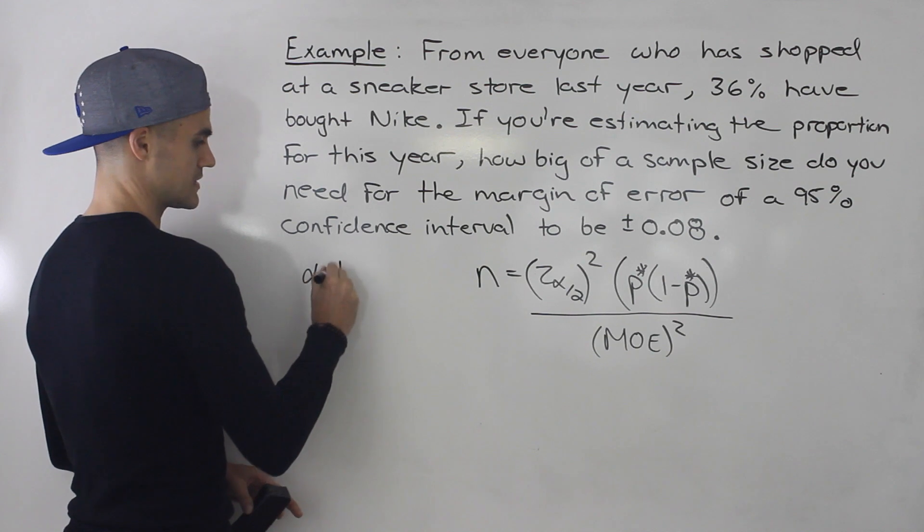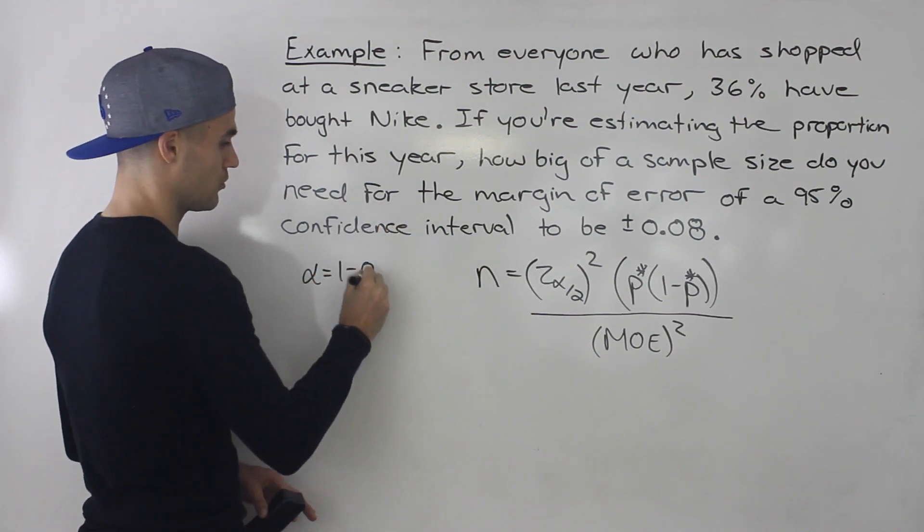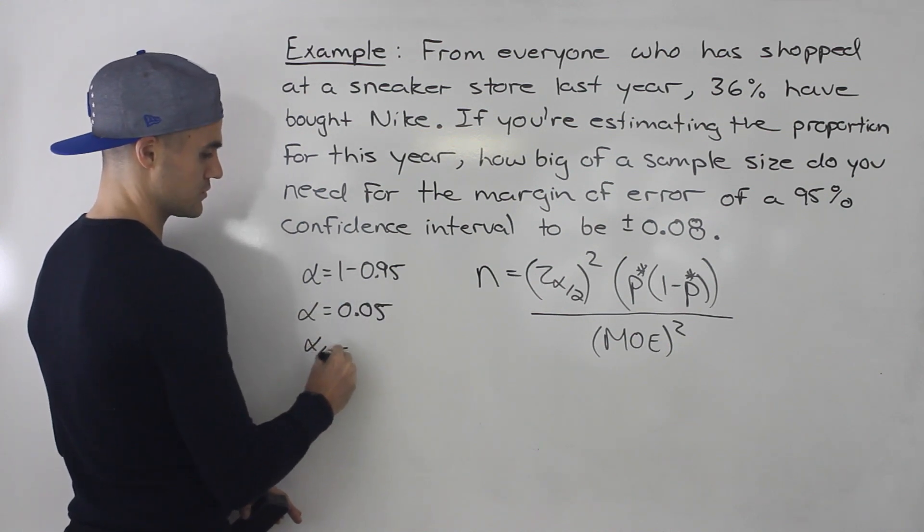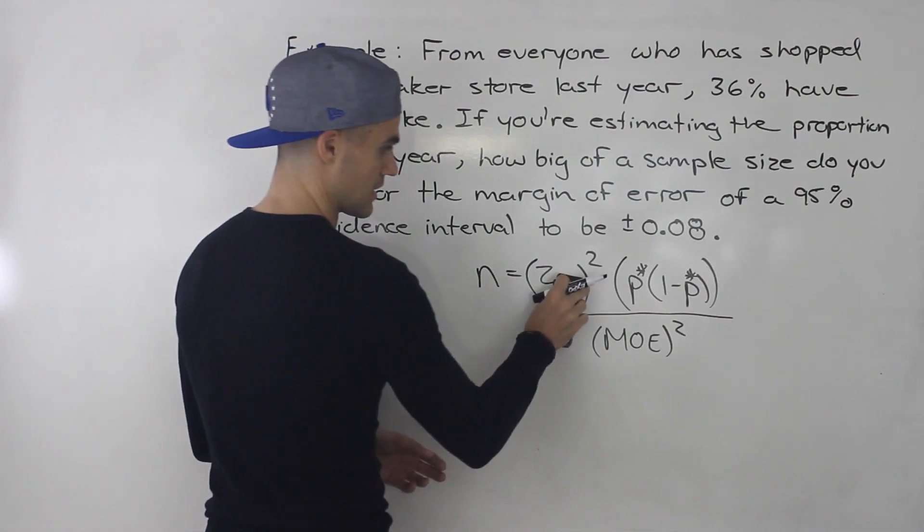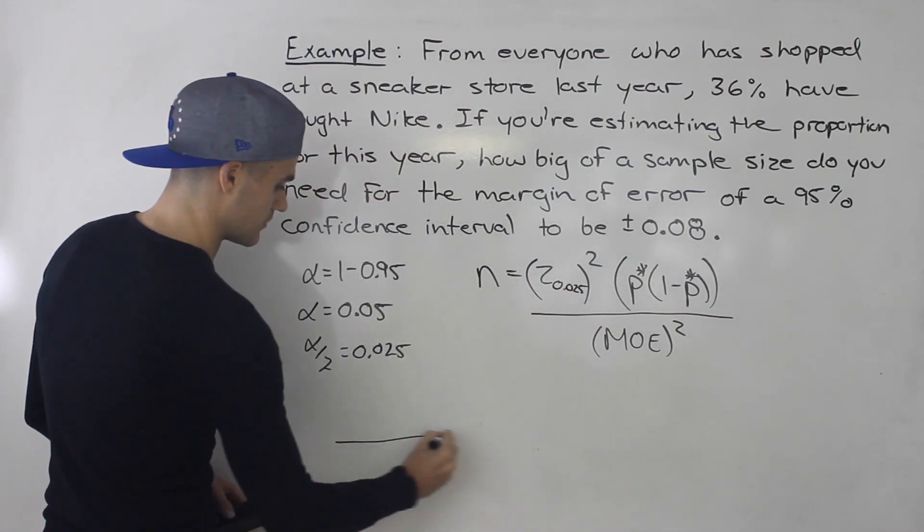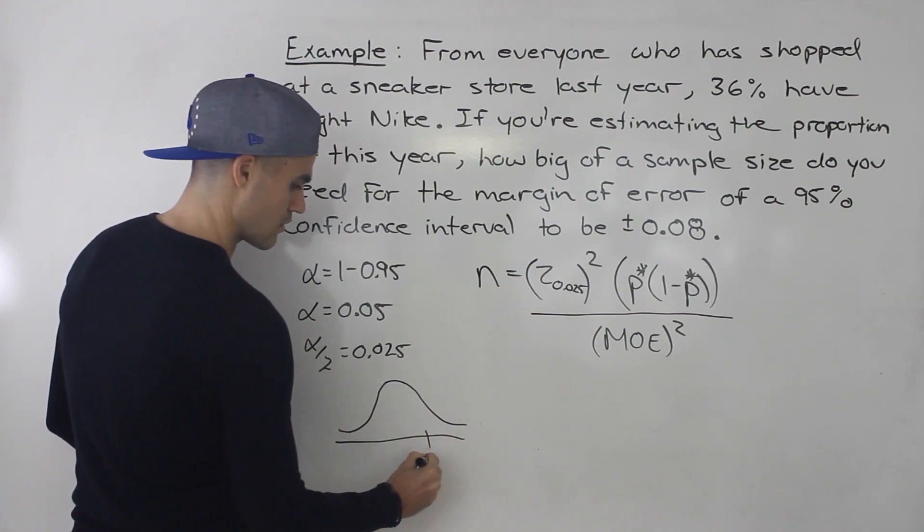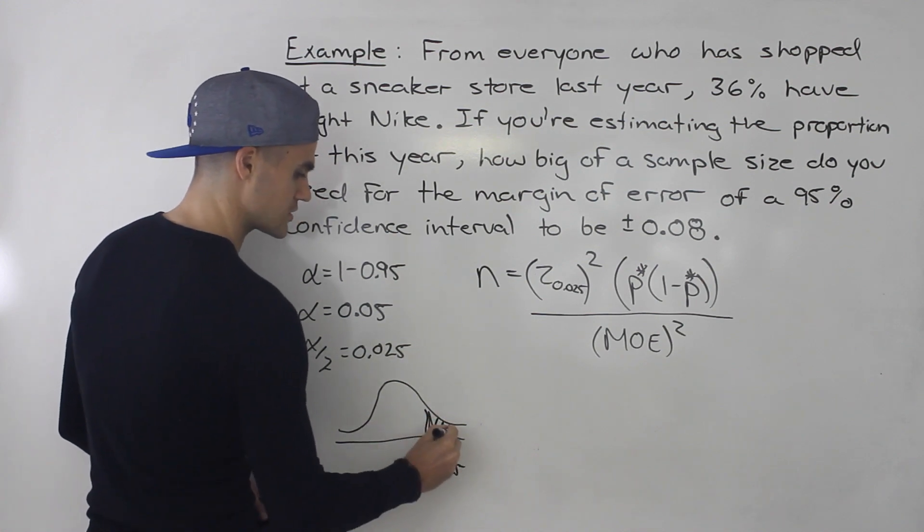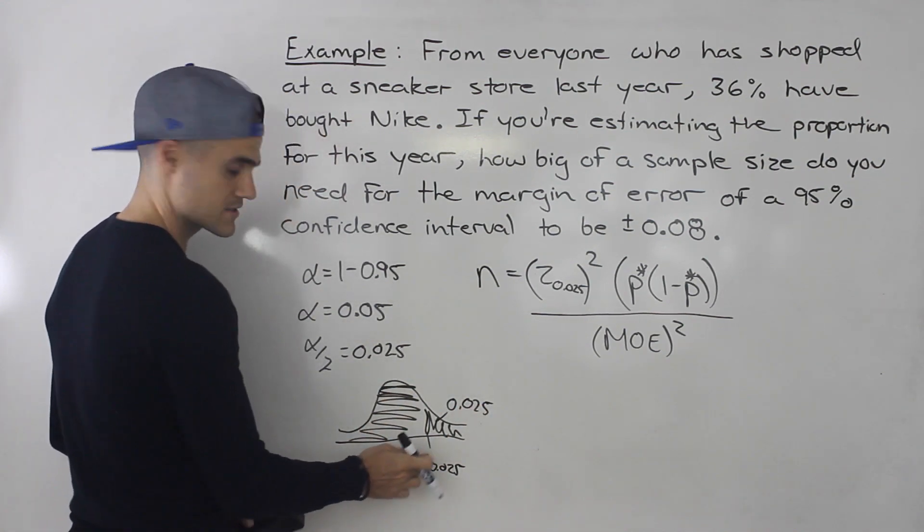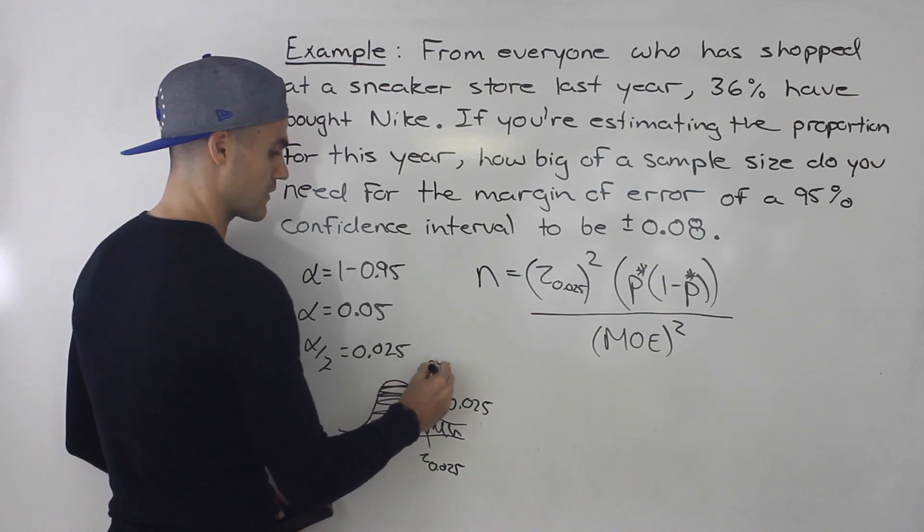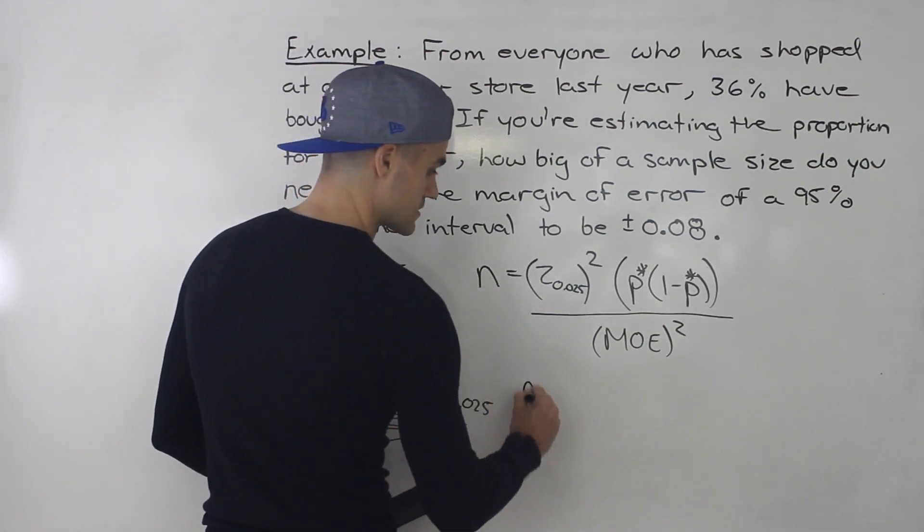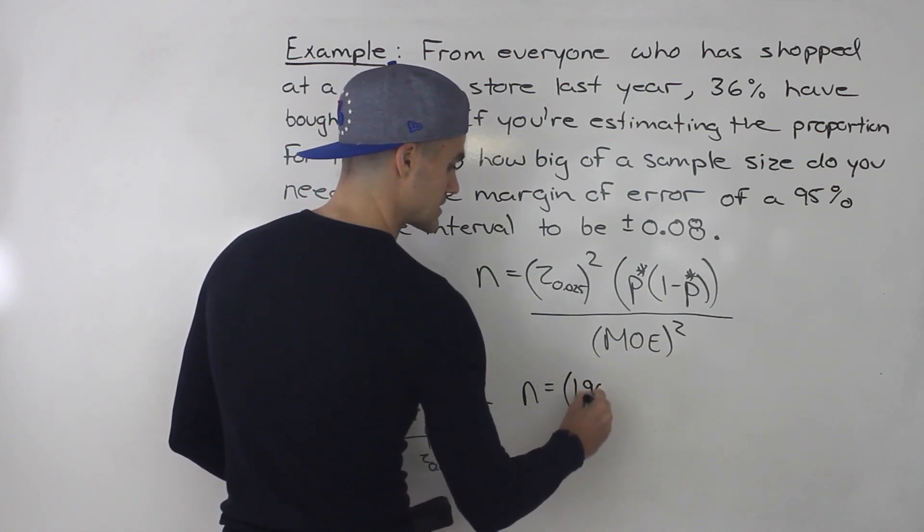So first thing, alpha is equal to 1 minus the confidence percentage, 0.95, which would be 0.05. So that means alpha over 2 is going to be 0.025. And so this here is going to be z of 0.025. So you got to look up on a normal distribution, this over here, where this area to the right is 0.025. So the area to the left of that z score is going to be 0.975, and the z score is 1.96.